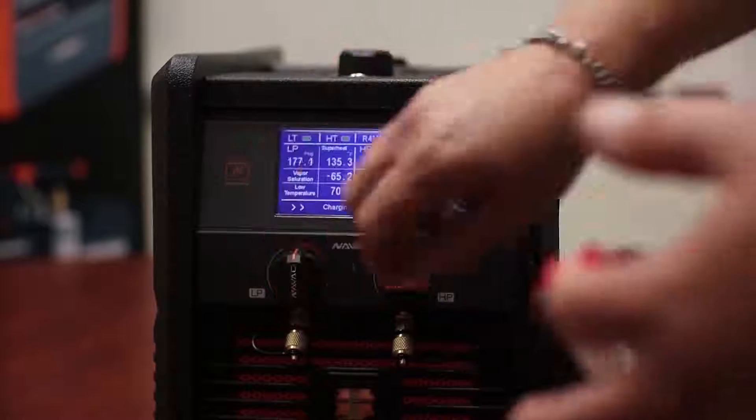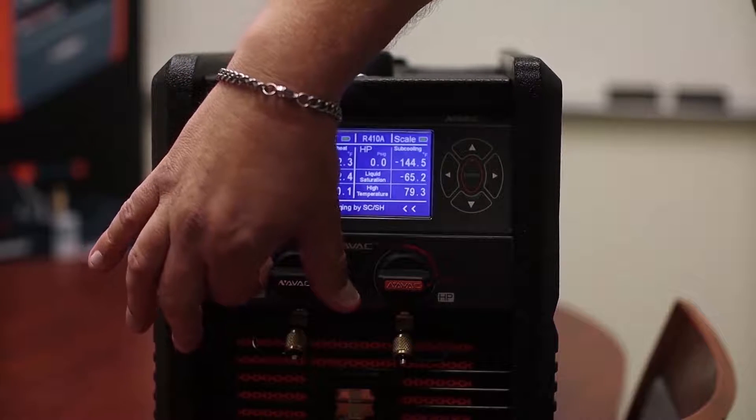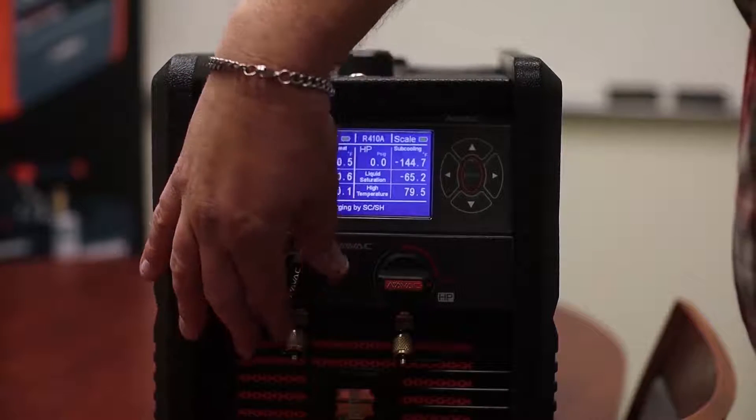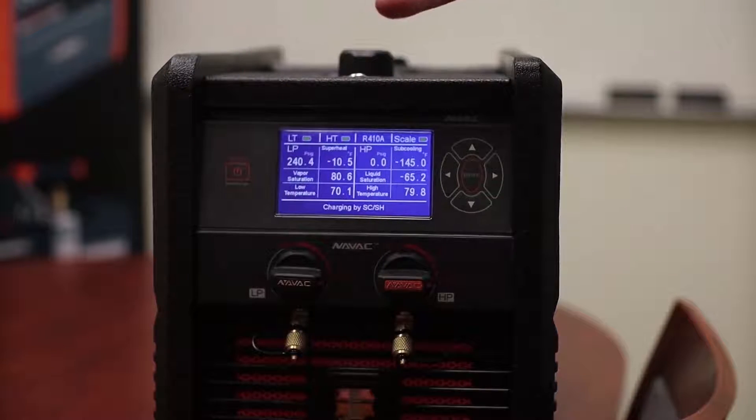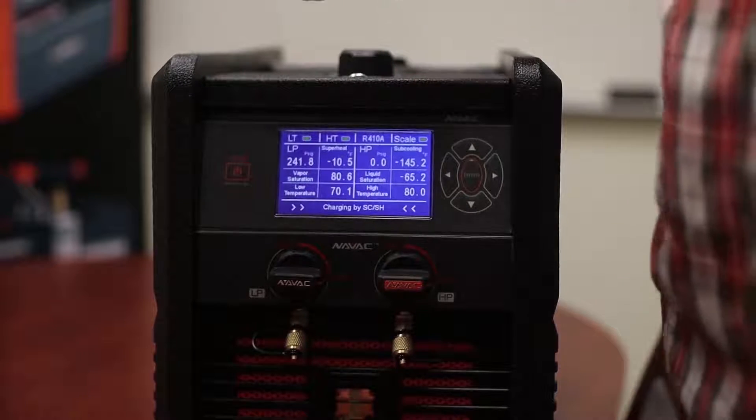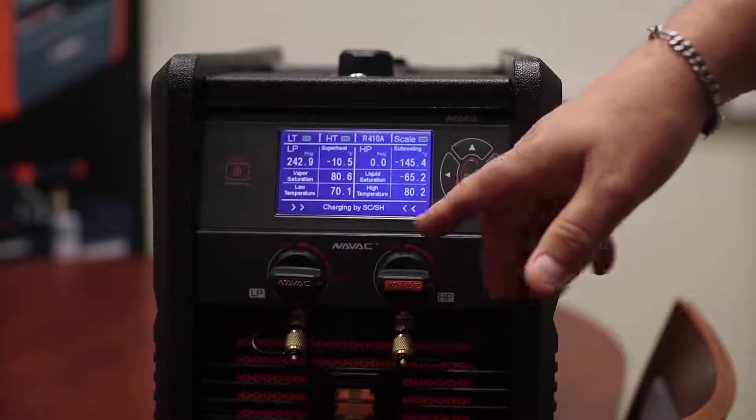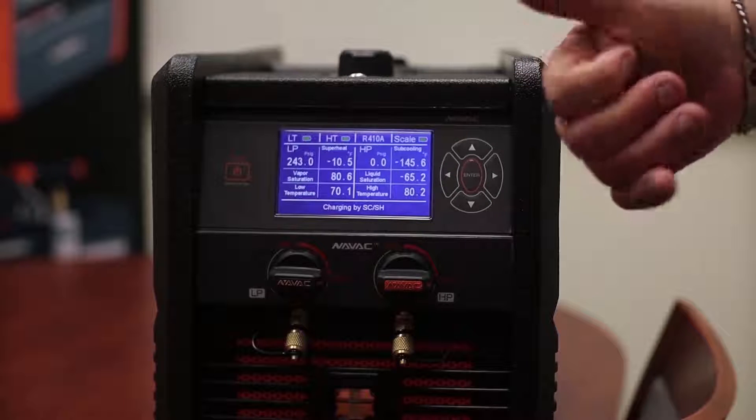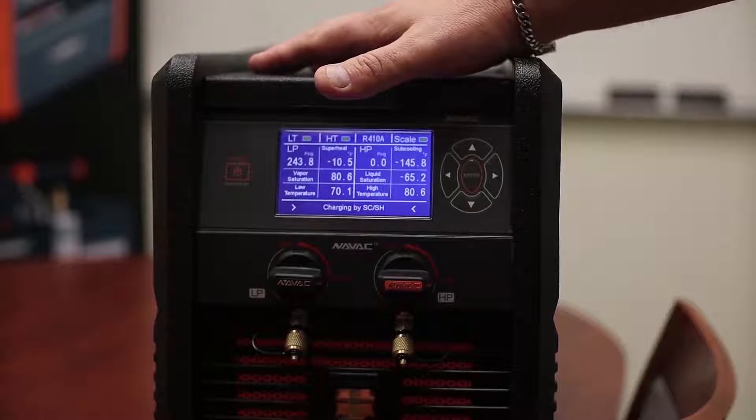The only valve open at this point in time or valves internally is the inlet and the outlet on the vapor side. So this is the low side of your manifold gauge. You're going to throttle in the refrigerant just like you would using a digital manifold gauge with temperature probes. So again, using subcooling, superheat, you're the technician. You need to understand how to do it. The machine doesn't do it for you.